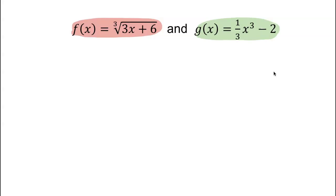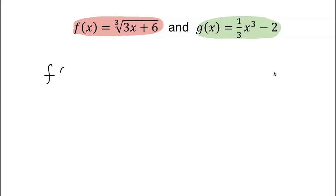To verify, we're going to find f of g of x and we hope to see x out of it. And we also need to see g of f of x and we want to see x. If both comes out to be x, then we're going to conclude f and g are inverse of each other.